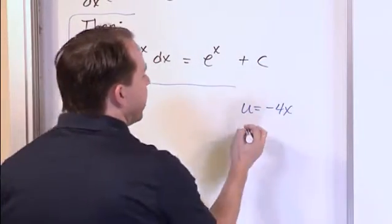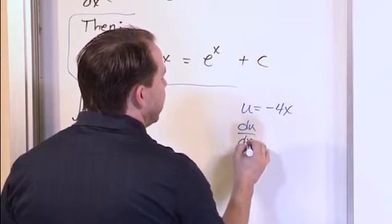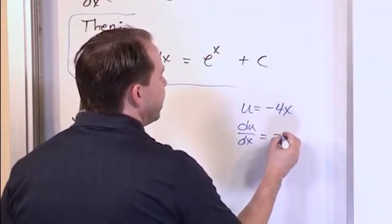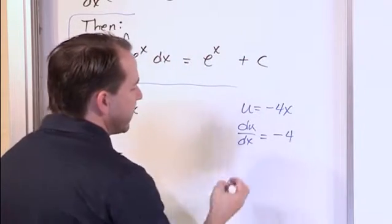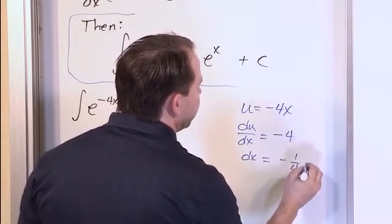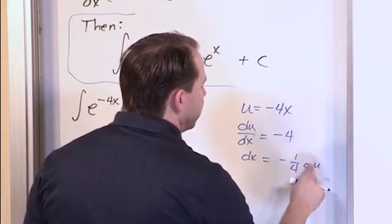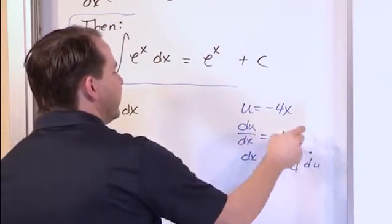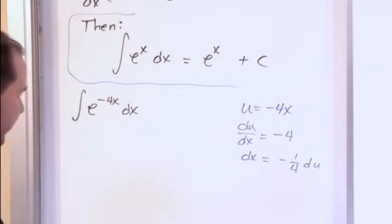And so we go ahead and do our derivative just like we always do. du dx is equal to, the derivative of this is negative 4, so it's just a number. And then dx is equal to negative 1 fourth du. Make that look like a d, du. And just move the dx over there, divide over here, and that's how we get that.